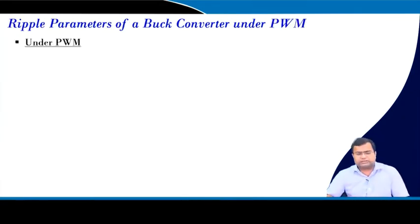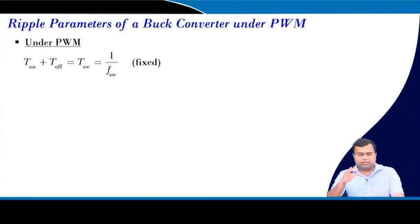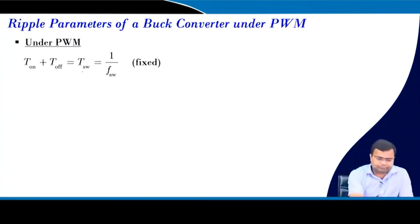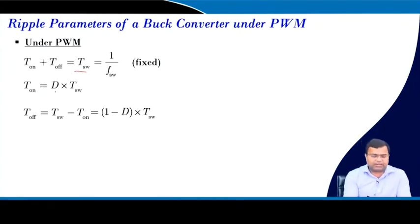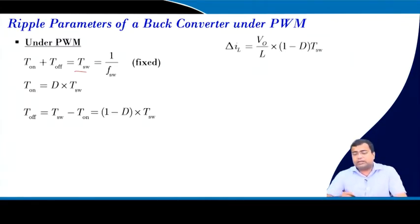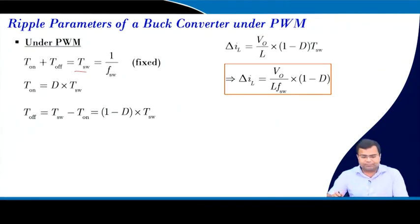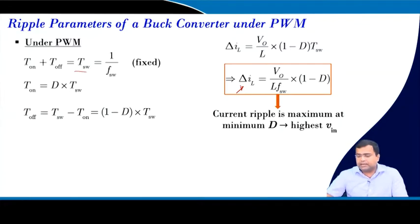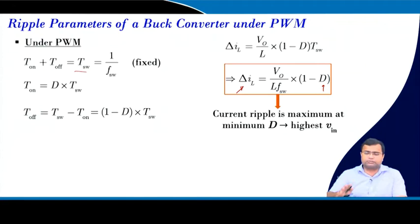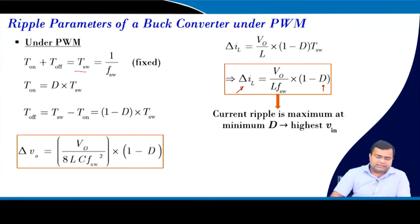Under pulse-width modulation, when the on-time and off-time sum is fixed — that is the switching period — and on-time is D times the period and off-time is (1−D) times the period, we can write the ripple parameters accordingly for a voltage regulator where output voltage is fixed. This ripple will be maximum when D is minimum, meaning the input voltage is at maximum since we are regulating the output voltage.